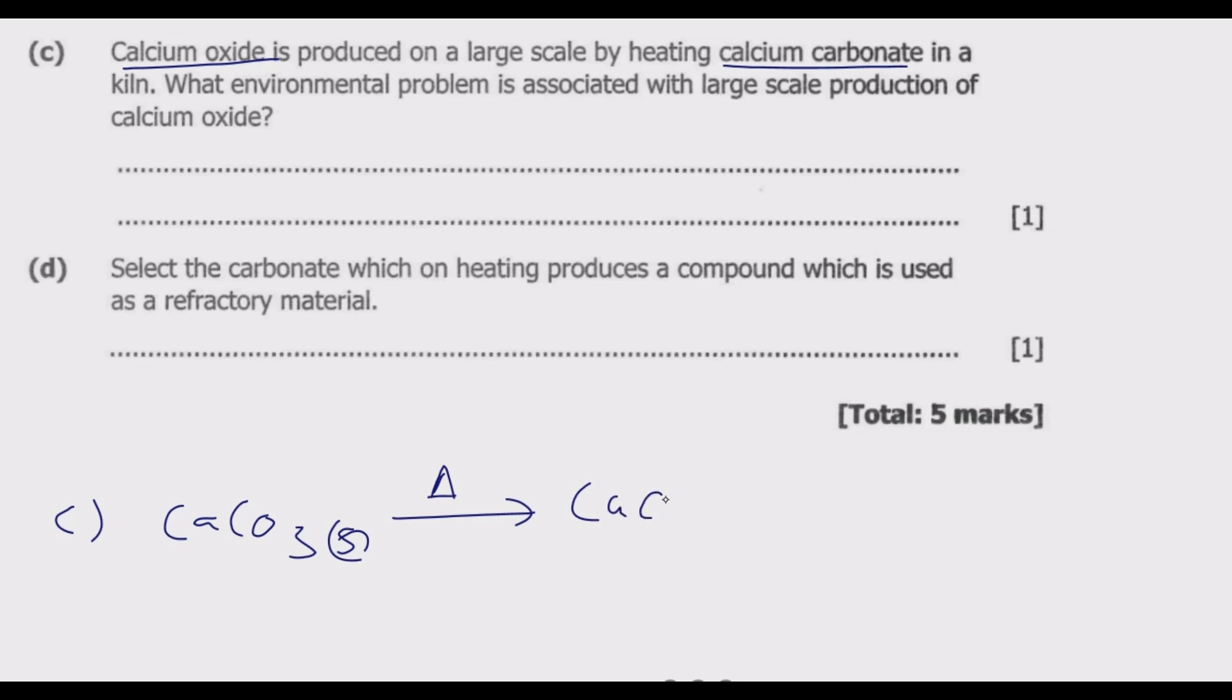Now this carbon dioxide gas which is a byproduct in the process of producing calcium oxide is one of the most important greenhouse gases. Greenhouse gases cause global warming by leading to greenhouse effect.